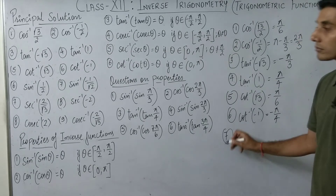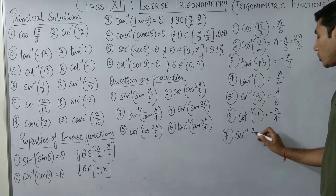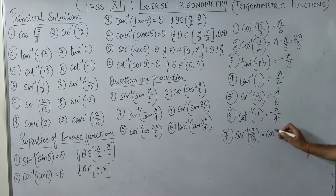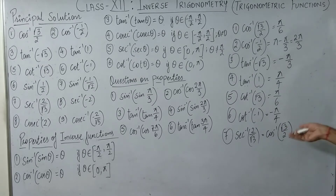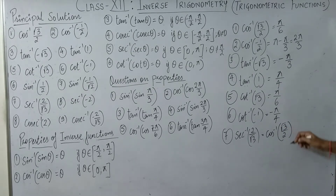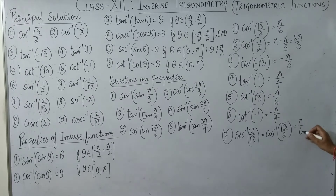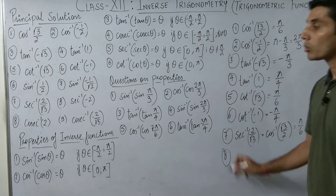Question seven: sec⁻¹(2/√3). Since we don't like working with sec directly, flip it: sec⁻¹(x) = cos⁻¹(1/x), so this becomes cos⁻¹(√3/2). cos(30°) = √3/2, so 30° = π/6. The answer is π/6, which lies in [0, π], so it's perfectly valid.